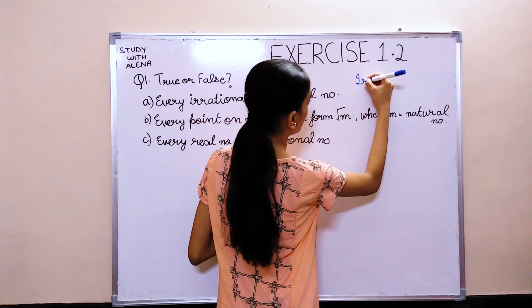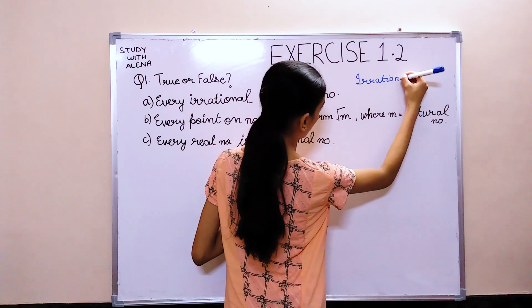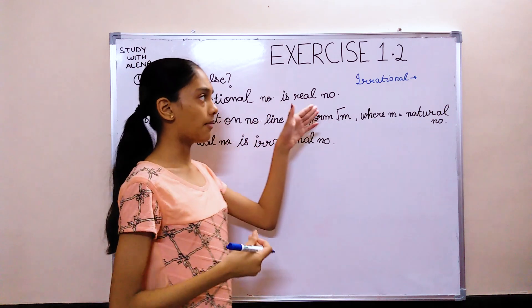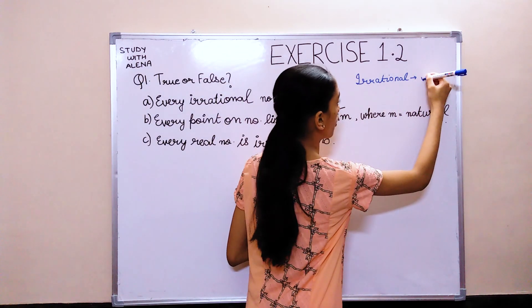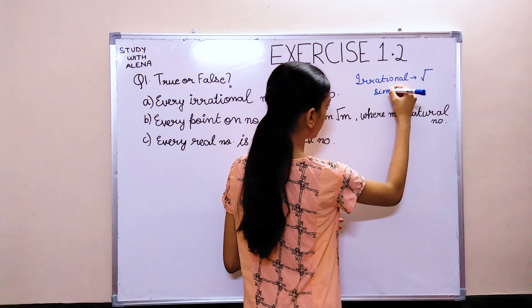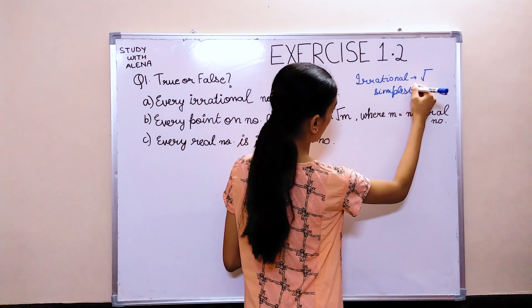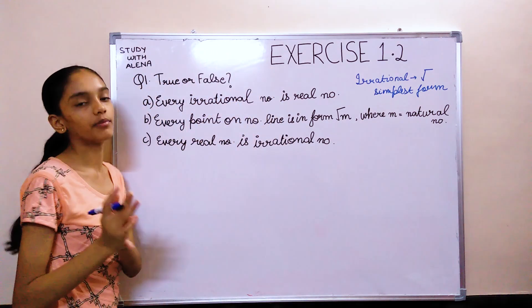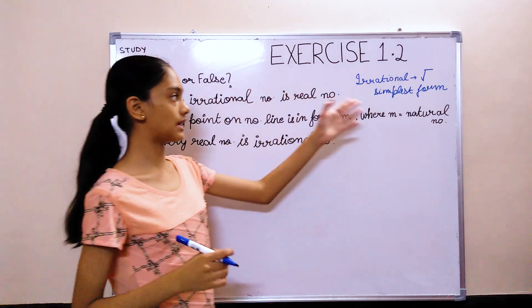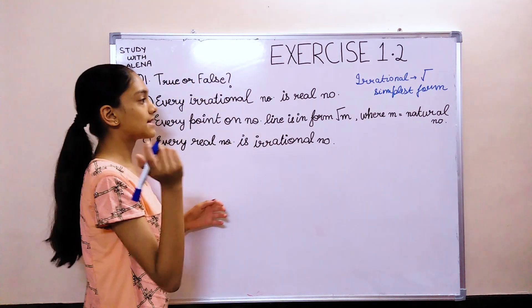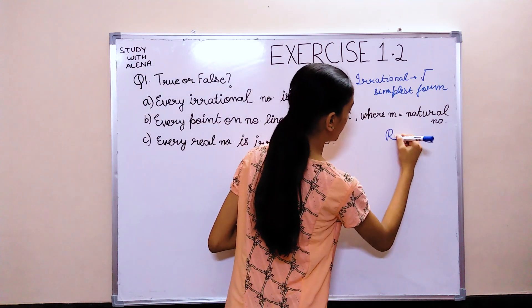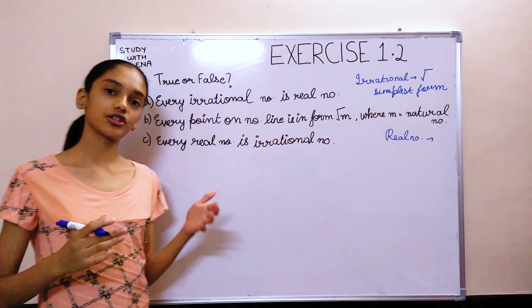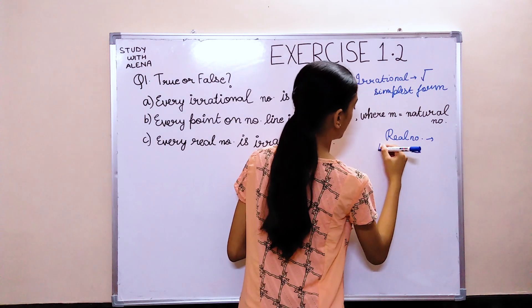An irrational number is, in the very basic statement, a number which is in the form of root in its simplest form. A rational number, in the simplest form, is in the form of root. And what is a real number? Real numbers are collection of rational and irrational numbers.